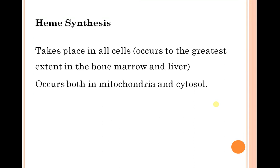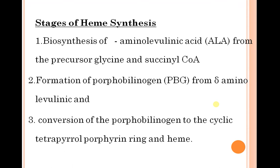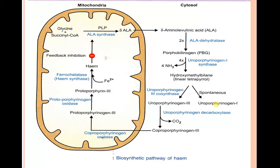Heme synthesis takes place in all cells but occurs to the greatest extent in the bone marrow and liver. It occurs in both mitochondria and cytosol. The stages of heme synthesis include: biosynthesis of delta-aminolevulinic acid from glycine and succinyl-CoA, formation of porphobilinogen from delta-aminolevulinic acid, and the convergence through uroporphyrinogen and coproporphyrinogen.